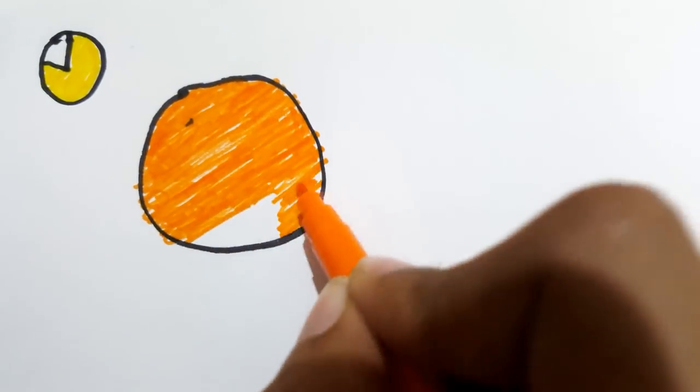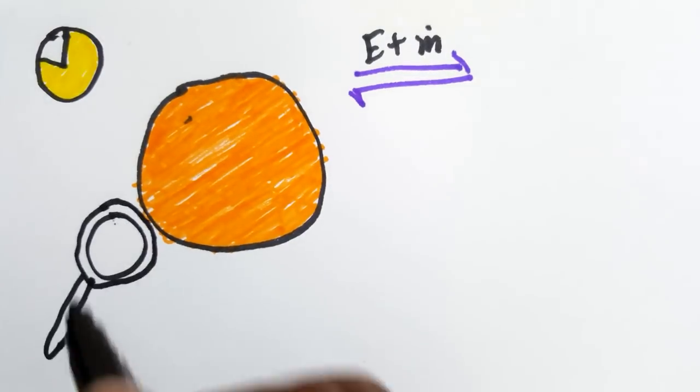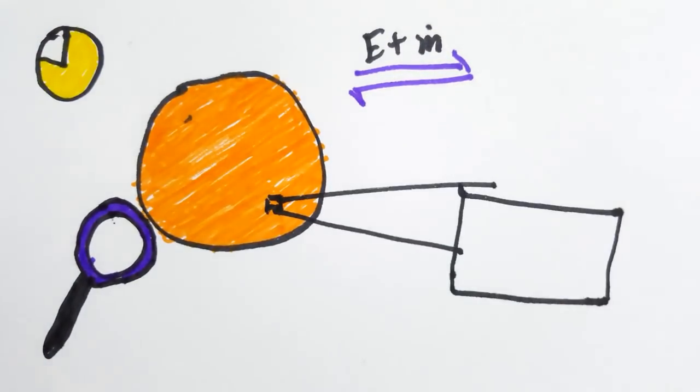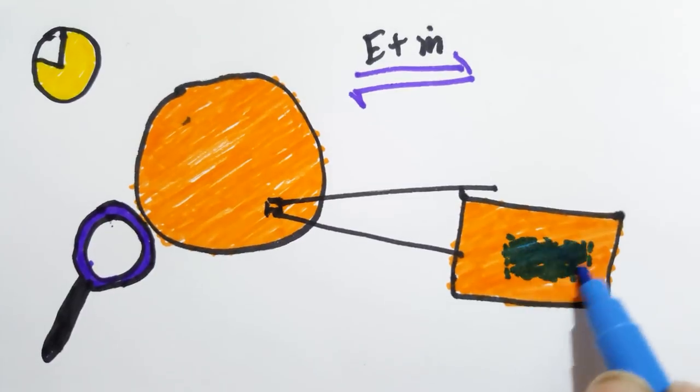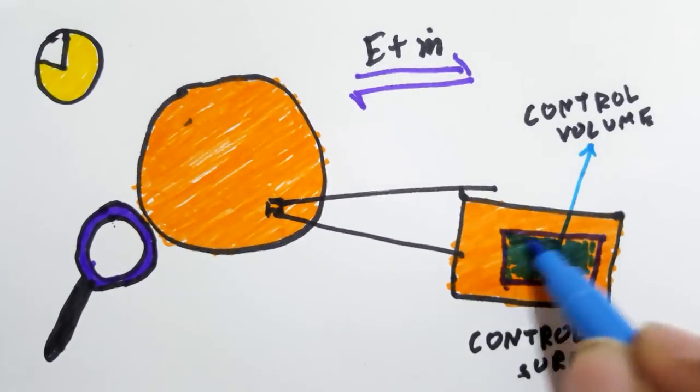Most thermodynamic systems are open systems. By analyzing such systems, attention is focused on a certain volume within the system known as the control volume. The surface bounding this open system is called a control surface.